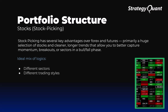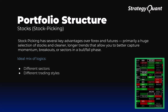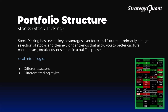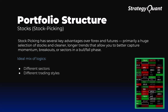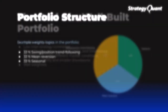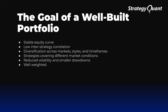Stock picking is a bit different. It has several key advantages over forex and futures, primarily a huge selection of stocks and cleaner, longer trends that allow you to better capture momentum, breakouts or sectors in a bull phase. Each stock has its own fundamentals, volatility and sector context, which creates more inefficiencies and therefore more opportunities. The key is to build a deliberately diversified portfolio combining different sectors like tech, energy, financials, healthcare, and different trading styles like trend following, mean reversion and breakouts. This avoids strategies that are copies of the same logic on different tickers. The goal is low correlation between approaches so that no single market phase like earnings season, macro shock or sector rotation dominates the overall portfolio performance.